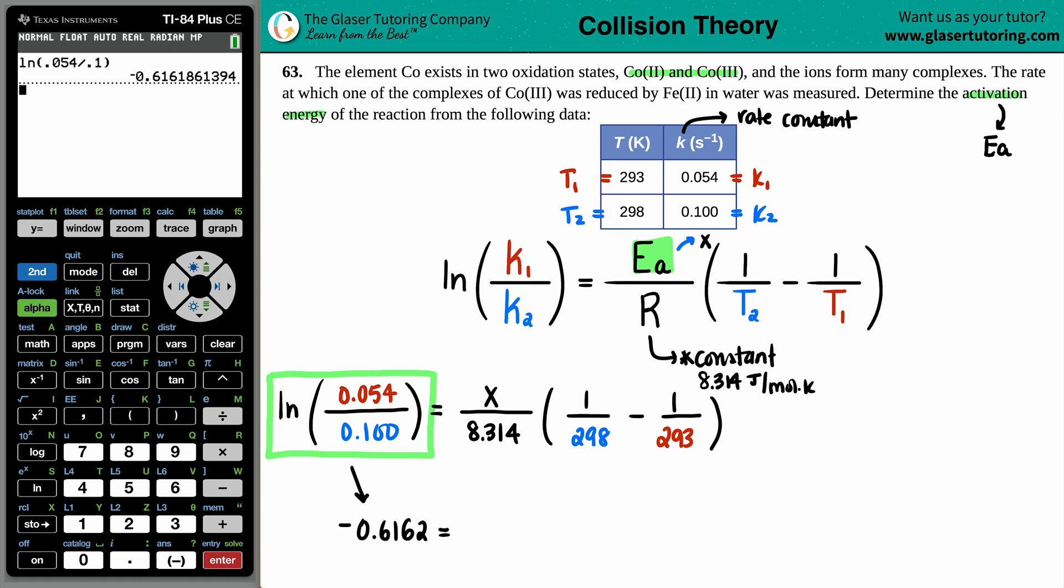Now for right now, I can't really do anything with this because it's with the variable, so I'm just going to leave this as X over 8.314. But then let Calci do the heavy lifting again to simplify this whole mess into one value. So it's going to be 1 divided by 298 minus 1 divided by 293. There we go. So this is now all being multiplied by negative 5.726 times 10 to the negative 5.